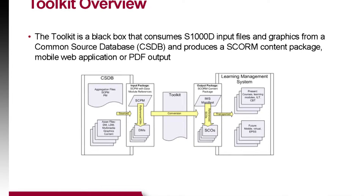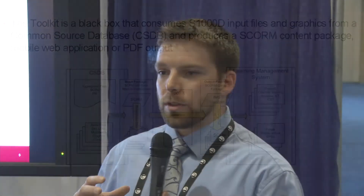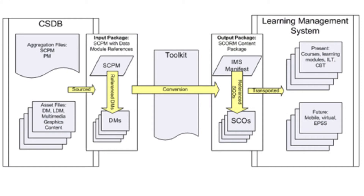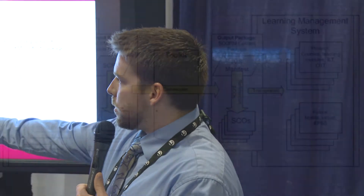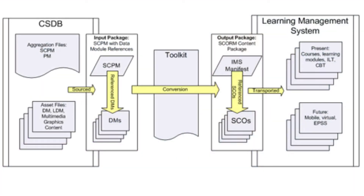This diagram shows a brief overview of the architecture. The toolkit is essentially a black box — it consumes S1000D data. S1000D has data modules, the smaller pieces that come in from the CSDBs, and the SCPM that gives the structure to which those data modules are designed. The toolkit takes in the SCPM and DMs, transforms them, and outputs a SCORM package mapped to the IMS manifest and SCOs, which can then be deployed in any LMS.